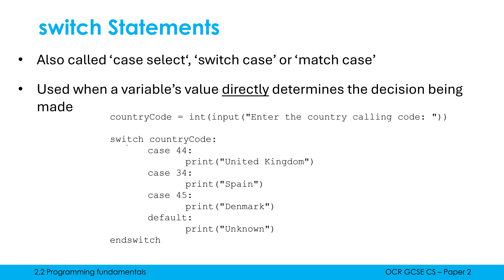In OCR exam reference language, we start with the word 'switch' and end with 'end switch', similar to using 'end if'. Unlike if statements, in OCR ERL we have colons, which makes it more like Python — colons at the end of our first line and each of our cases. We write the word 'switch', then the variable we are using. This is the variable which is directly determining the decision being made, so here 'country code' is determining what happens.